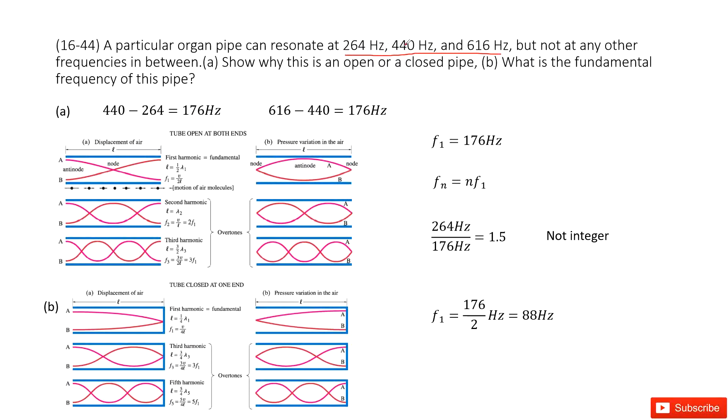So we calculate: 440 minus 264 equals 176 Hz. And 616 minus 440 equals 176 Hz. These are the differences.